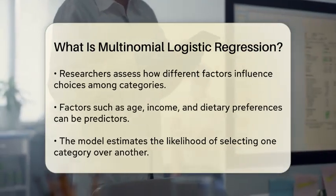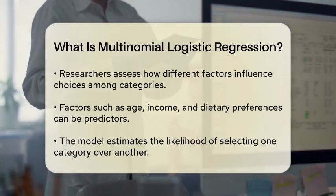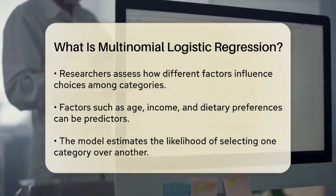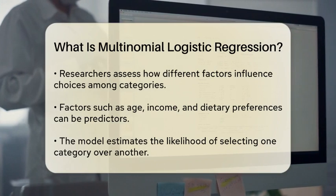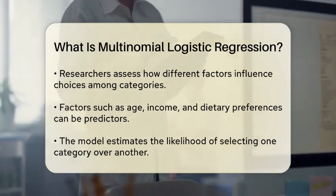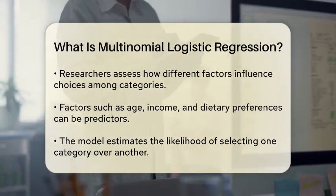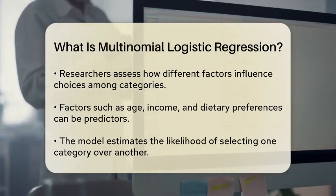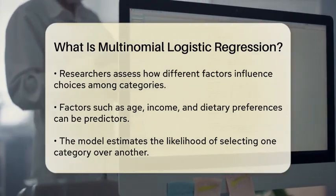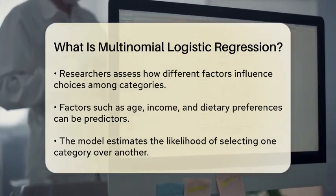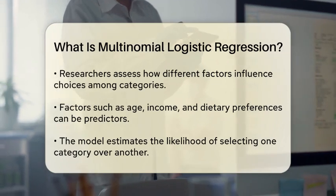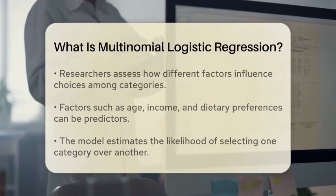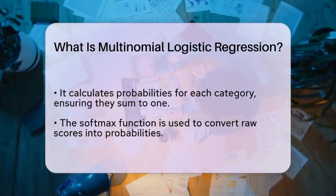In this method, each category is compared to a reference category, allowing researchers to assess the likelihood of each outcome based on predictor variables. For example, if we consider factors such as age, income, and dietary preferences, multinomial logistic regression helps in estimating how these factors influence the likelihood of choosing one type of fruit over another.